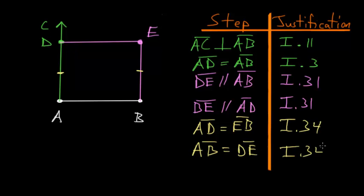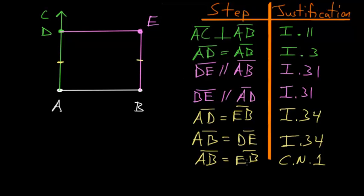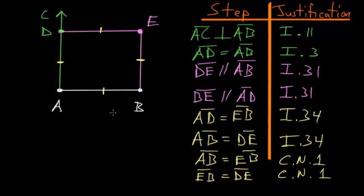Since AD and AB are equal, this implies that AB and EB are equal — by Common Notion 1: things which are equal to the same thing are equal to each other. And since AB equals EB and AB equals DE, then EB equals DE. In essence, all four sides of this shape are equal to each other.